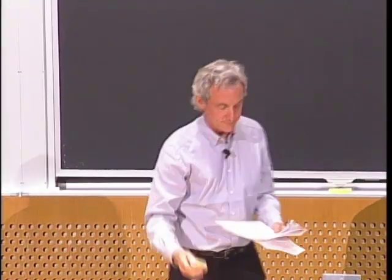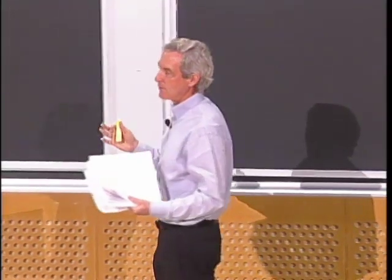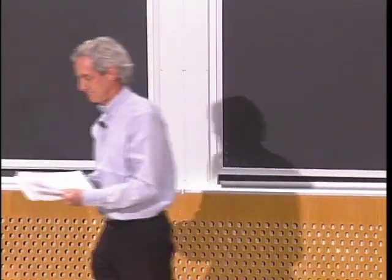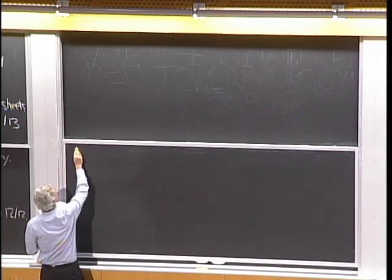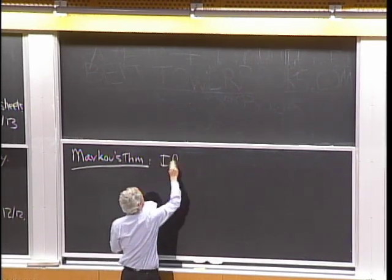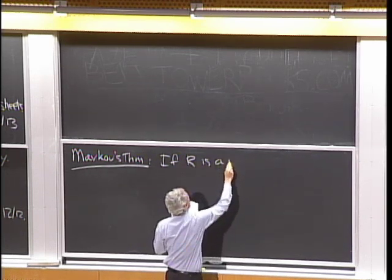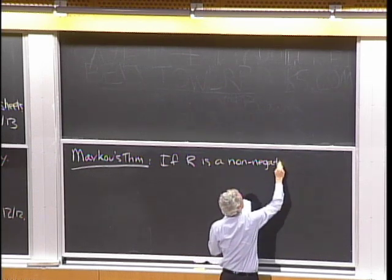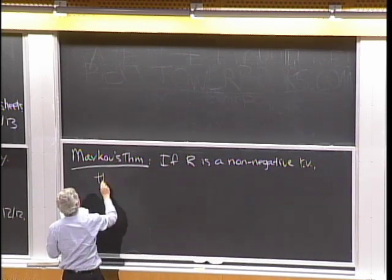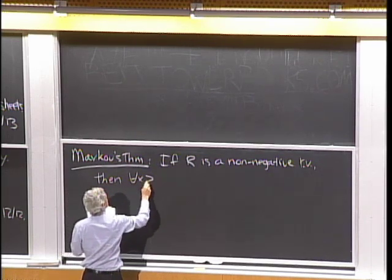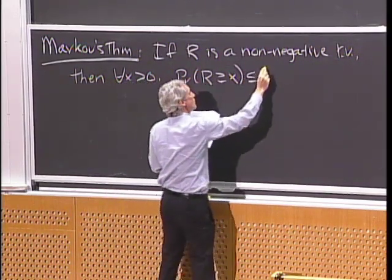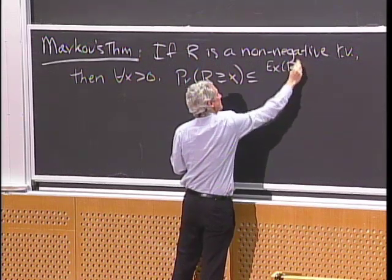The first tool is known as Markov's theorem. Markov's theorem says that if a random variable is always non-negative, then it is unlikely to greatly exceed its expectation. In particular, if r is a non-negative random variable, then for all x greater than 0, the probability that r is at least x is at most the expected value of r divided by x.